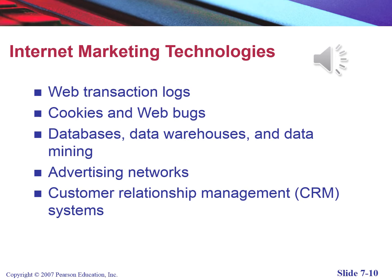A primary source of consumer information on the web is a transaction log maintained by all web servers. A transaction log records user activity at a website, while transaction logs create the foundation of online data collection at a single website. Marketers use tracking files to follow users across the web as they visit other sites. There are three primary kinds of tracking files: cookies, flash cookies, and web beacons.